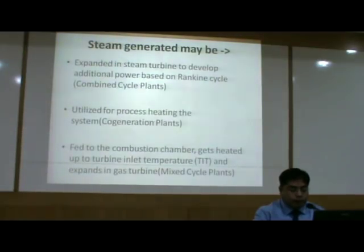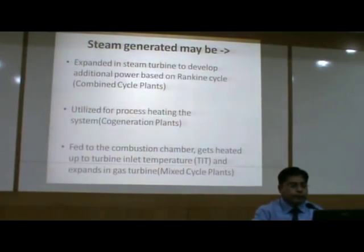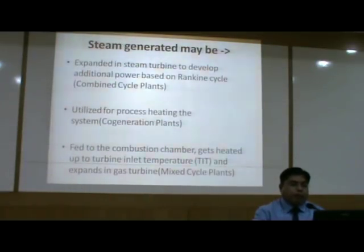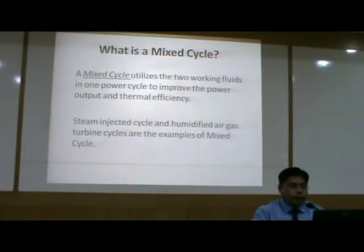The steam generated by use of the recovered heat from the HRSG may be expanded in a steam turbine to develop additional power based on the Rankine cycle. It may also be utilized for process heating, like in co-generation plants, or it may be fed to the combustion channel, heated up to the turbine inlet temperature, and expanded in the gas turbine — which is known as mixed cycle plants. My emphasis in this lecture is on the use of mixed cycle.